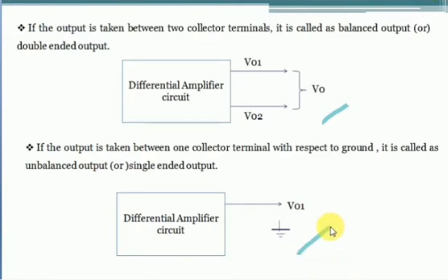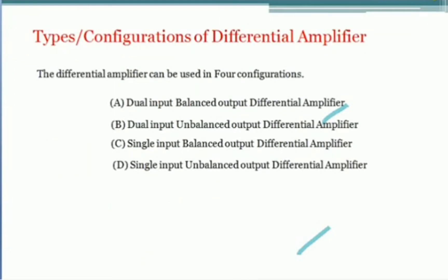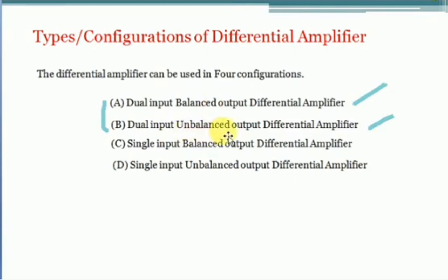Depending on these parameters, the differential amplifier can be used in four configurations. The first configuration is dual input, balanced output differential amplifier. The second configuration is dual input, unbalanced output differential amplifier. In both these cases, two inputs are applied — but in the first case the output is taken between the two collector terminals, while in the unbalanced output case the output is taken at only one collector terminal.